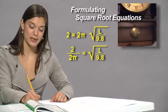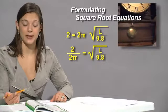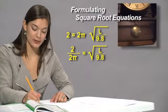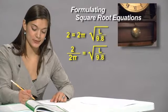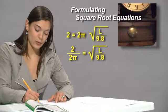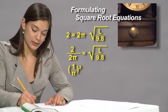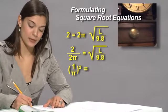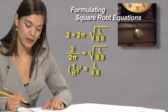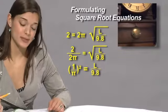We need to square both sides to cancel out the radical sign. So everything squared on both sides is going to give us 1 over pi squared equals L over 9.8. Now we don't have a radical sign anymore, so it's easier to solve.